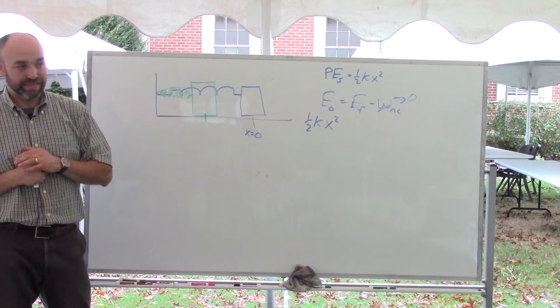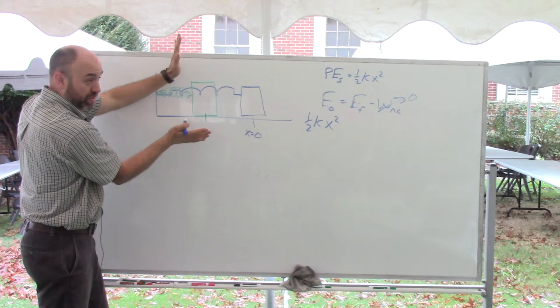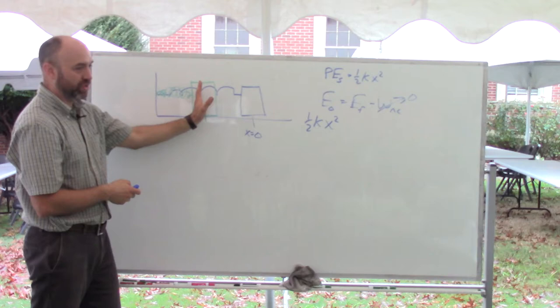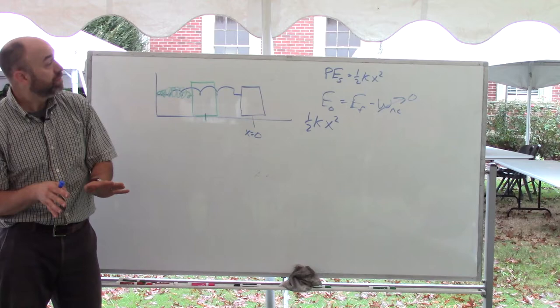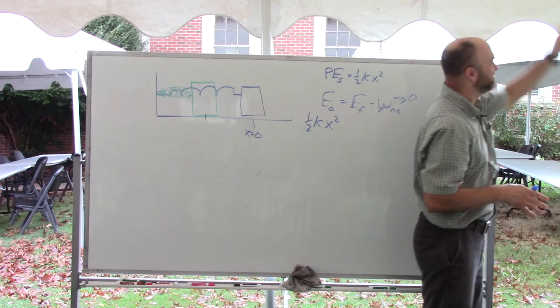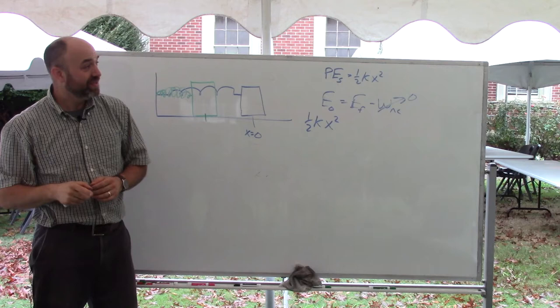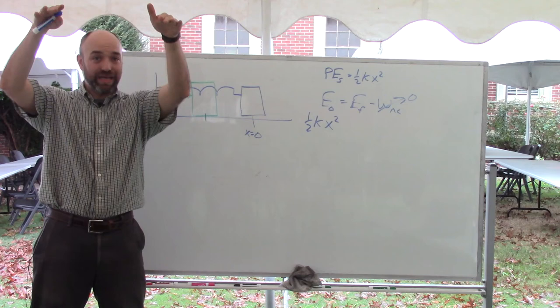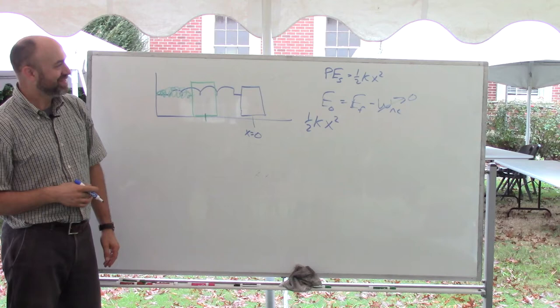Question one: is it off the ground? No — it never leaves the ground for this whole problem, it's just going to bounce back and forth when I let go. Question two: is it moving? It's starting right here — is it moving? No, I'm still holding on to it. Is it spinning? No. Is there a spring stretched or smashed? Sure enough. So initially all we have is one-half k x squared.